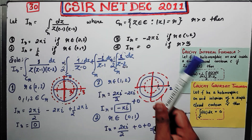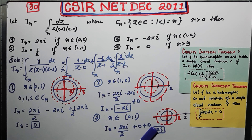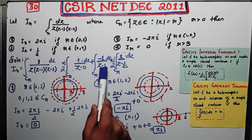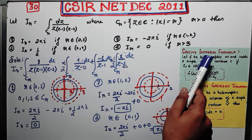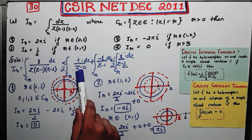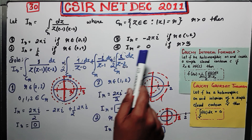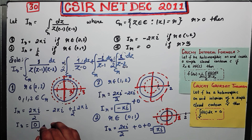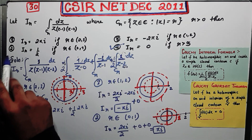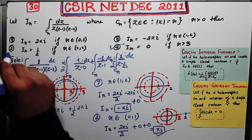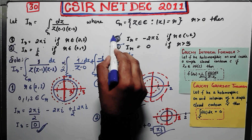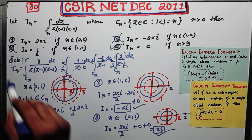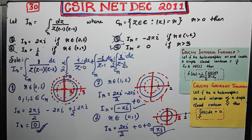For R greater than 3, all points 0, 1, and 2 are inside the contour, so you apply the Cauchy integral formula to everything — and that gives the same result as option 1, which is IR = 0. Checking all options: option 2 gives πi, not 1/2, so it is wrong; option 3 gives minus πi, which is wrong; option 1 gives 0, which is wrong. Therefore, option 4 — IR = 0 when R > 3 — is the only correct option.